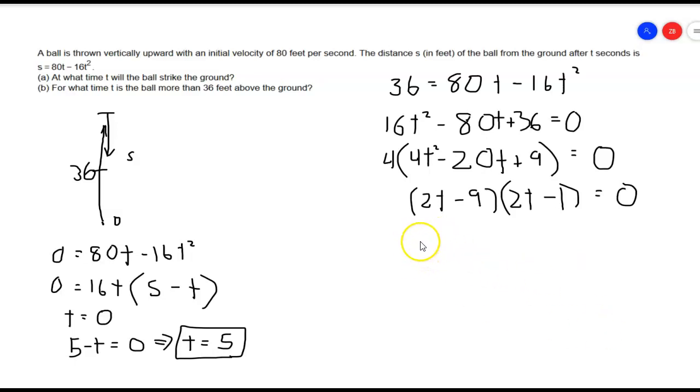This is going to give me two solutions. From this one, I set that equal to 0, and that's 2t equals 9, so t equals 9 over 2, which equals 4.5 seconds. And then from this one, I'll have t equals 1 half, which equals 0.5 seconds.